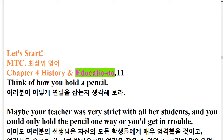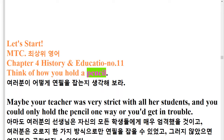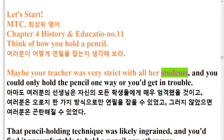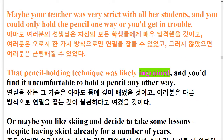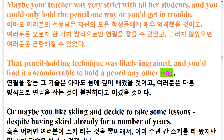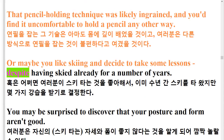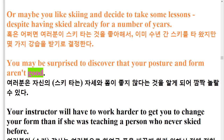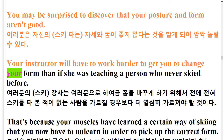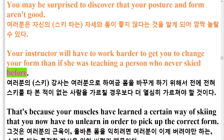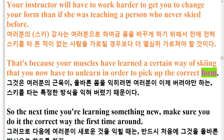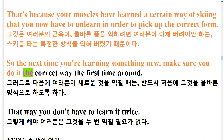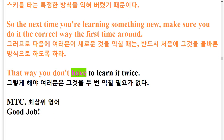Think of how you hold a pencil. Maybe your teacher was very strict, and you could only hold the pencil one way or you'd get in trouble. That pencil-holding technique was likely ingrained, and you'd find it uncomfortable to hold a pencil any other way. Or maybe you like skiing and decide to take some lessons, despite having skied already for a number of years. You may be surprised to discover that your posture and form aren't good. Your instructor will have to work harder to change your form than if she was teaching a person who never skied before. That's because your muscles have learned a certain way of skiing that you now have to unlearn in order to pick up the correct form. So the next time you're learning something new, make sure you do it the correct way the first time around. That way you don't have to learn it twice.